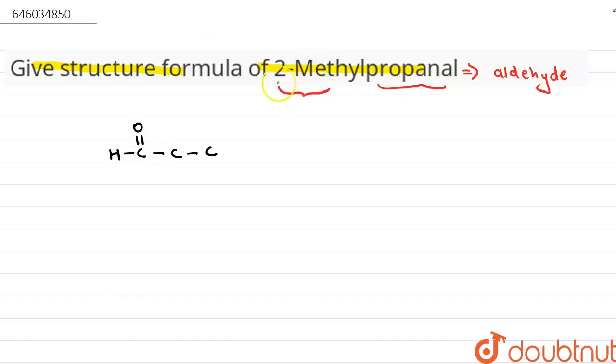So this is our position second, and at this position we have a methyl group as a substituent. Now we will add the hydrogen to complete the valency of carbon.